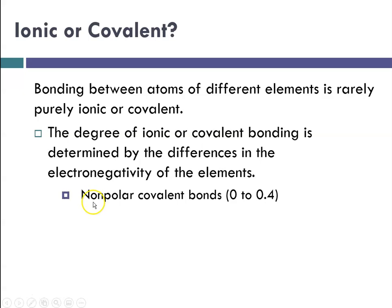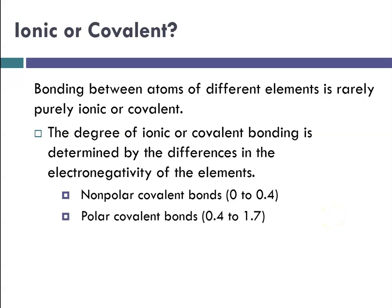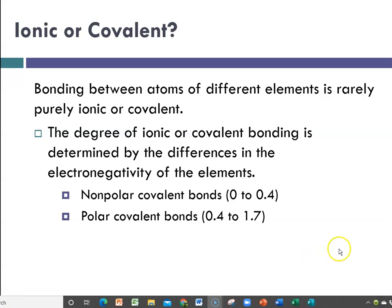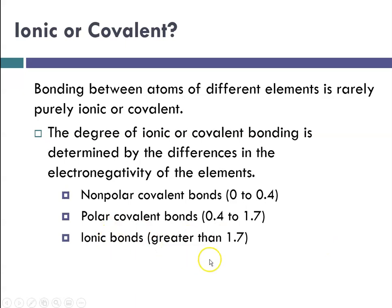A truly pure nonpolar covalent bond occurs when the difference in electronegativity is between 0 and 0.4. A polar covalent bond — the prime example being water — occurs when the difference is between 0.4 and 1.7, meaning electrons spend more time on one atom than another. When the difference in electronegativity is greater than 1.7, one atom gets the electrons and the other loses them, resulting in an ionic bond.